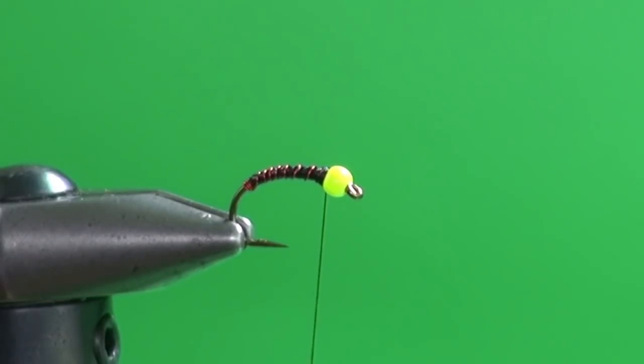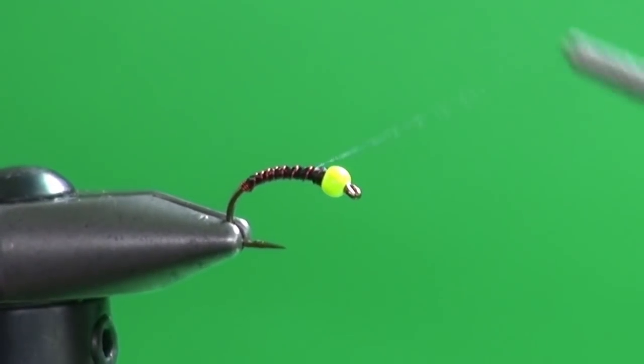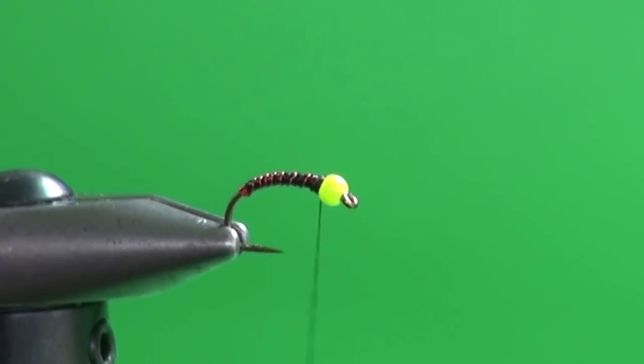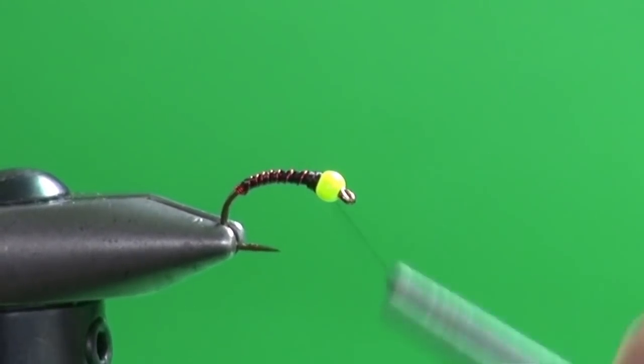And then we'll build up a little thread thorax. So again, I'm spinning that thread counterclockwise to flatten the wraps. And we're just going to build a nice, even ramp.